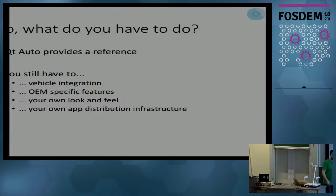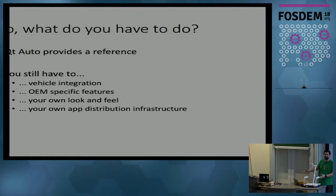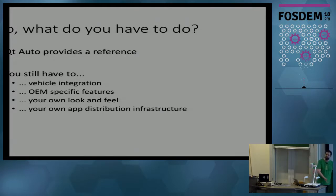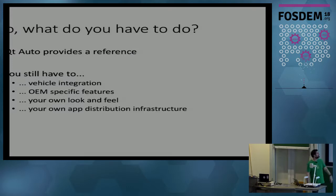What does the customer then have to do as a car maker? We provide a reference — we show how we think it should be built, but we don't build a specific car. So you have to integrate it to your vehicles, your electrical systems, your CAN network. You have to add your own features, your own look and feel. And you need your own infrastructure for deploying apps and upgrades.